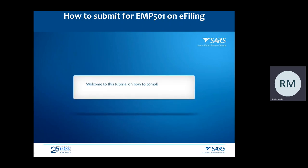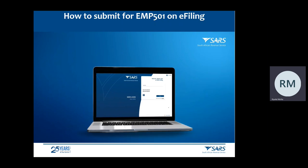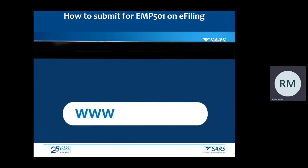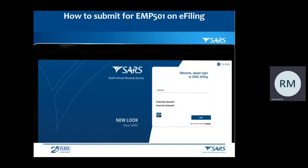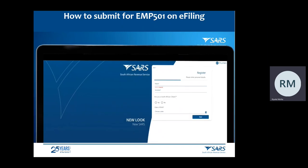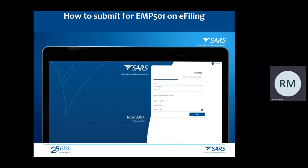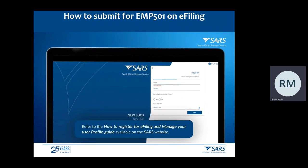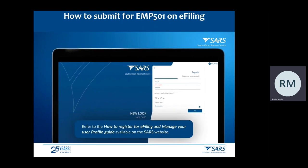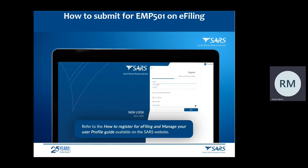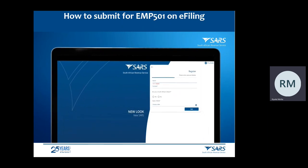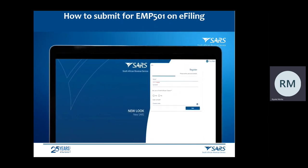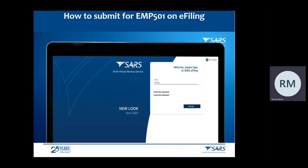Welcome to this tutorial on how to complete and submit the employer reconciliation EMP501 on SARS eFiling. If you aren't already an eFiler, go to www.sars.gov.za, click Register and follow the process. For further assistance with eFiling registration, refer to the How to Register for eFiling and Manage Your User Profile guide available on the SARS website. Once registered, log into eFiling using your username and password.